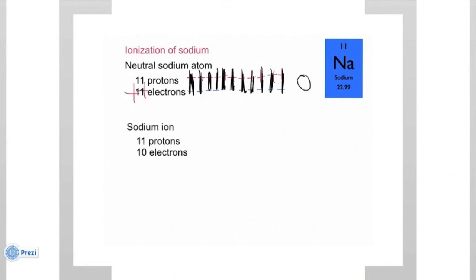Now, the sodium ion, on the other hand, still has 11 protons, but since it has lost an electron, it only has 10 electrons. So, when we look at how the charges cancel, positive still cancels out negative.